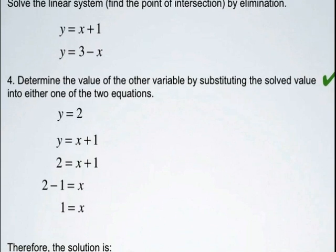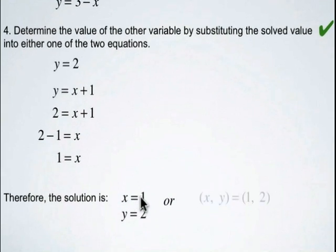Therefore, the solution to our equation is x equals 1, or (1, 2). And so that means the intersection point is (1, 2). So these two, the linear system, is going to intersect at that point.